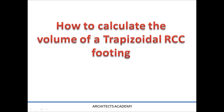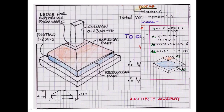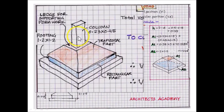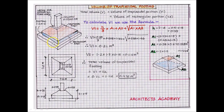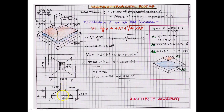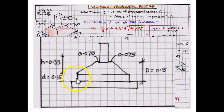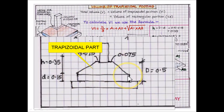So for that, let us go to the sketch and see what we have here. We have a column of size 0.23 by 0.45, and the column has a footing of dimension 1.2 meters by 1.2 meters. Looking at the footing from the side, you will see that it has a rectangular part which is the lower portion, and a trapezoidal part which is the upper portion.